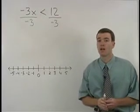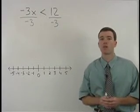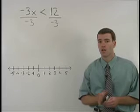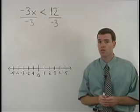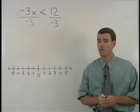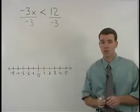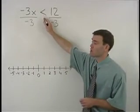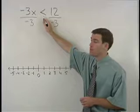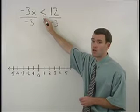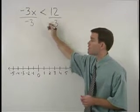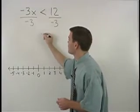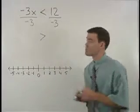But here's the rule you have to watch out for when solving inequalities. When you divide both sides of an inequality by a negative number, you must switch the direction of the inequality sign. So this less than in our original problem becomes greater than in our second step.